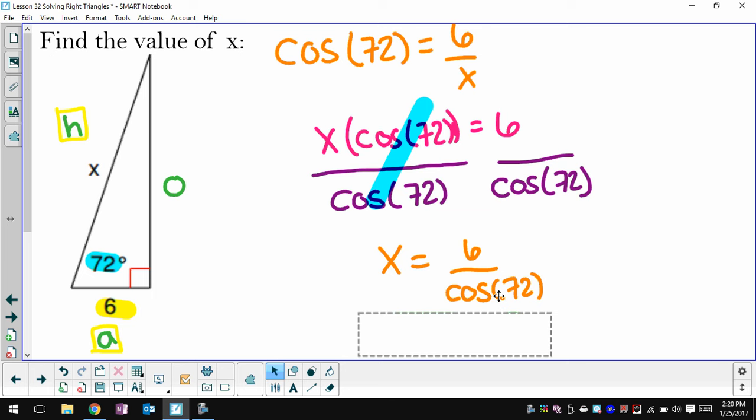So I'm going to get that my x is equal to 6 divided by cosine of 72. Now in my calculator, I can actually do 6 divided by, press the cosine function, plug in 72, and find that x is 19.4.